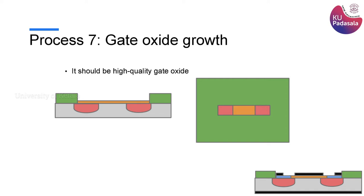Therefore you have to do dry oxidation for the gate oxide - you are not typically allowed to do wet oxidation for the gate oxide; instead you have to do dry oxidation. With dry oxidation you will get a very thin, nice, uniform layer of oxide, as you see here in the orange color. Now we do not want this gate oxide to be present in all areas; you want the gate oxide only at the top of the channel region.